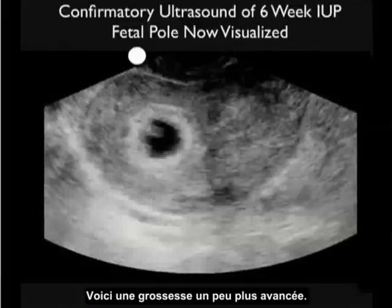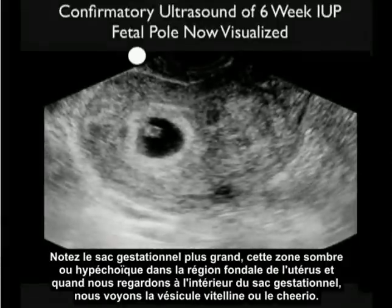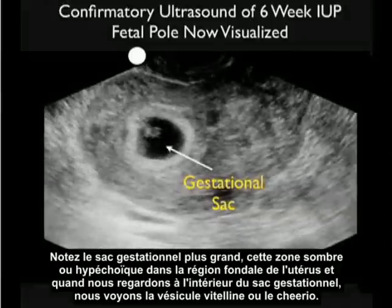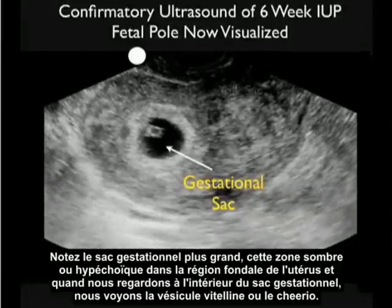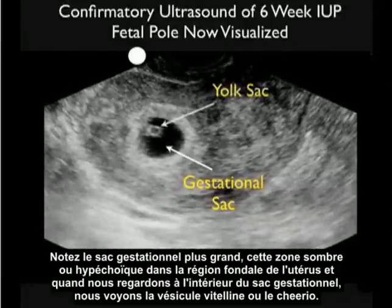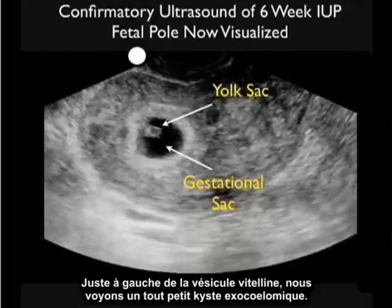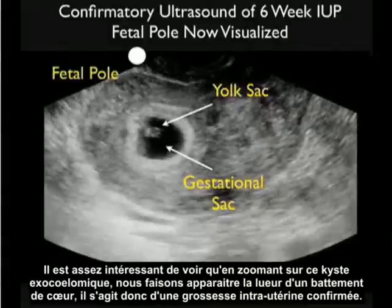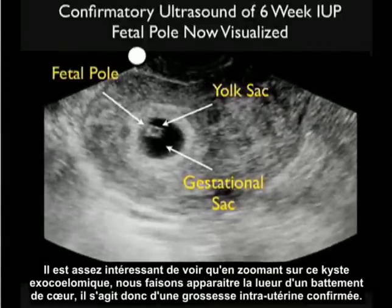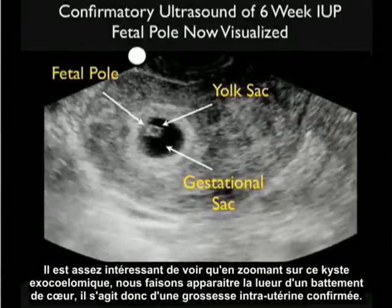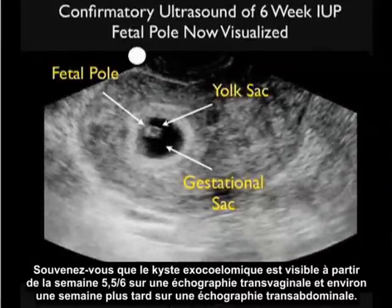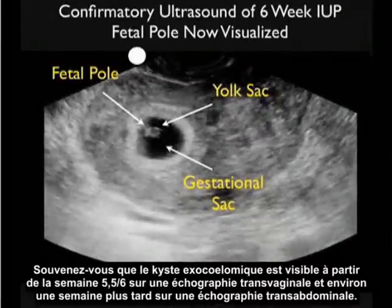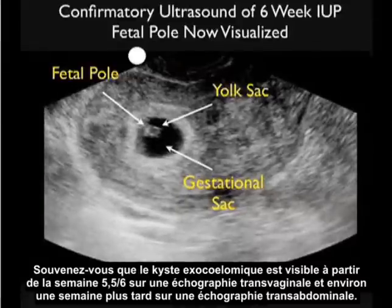Here we see a pregnancy that is a bit further advanced. We have a larger gestational sac — that darker hypoechoic area — within the fundal region of the uterus. Inside the gestational sac we see the positive yolk sac or cheerio, and just to the left of the yolk sac a tiny little fetal pole. As we zoom in on that fetal pole, we can make out the flicker of a heartbeat — a definitive intrauterine pregnancy. The fetal pole is seen at about 5.5 to 6 weeks on transvaginal sonography and about a week later on transabdominal sonography.